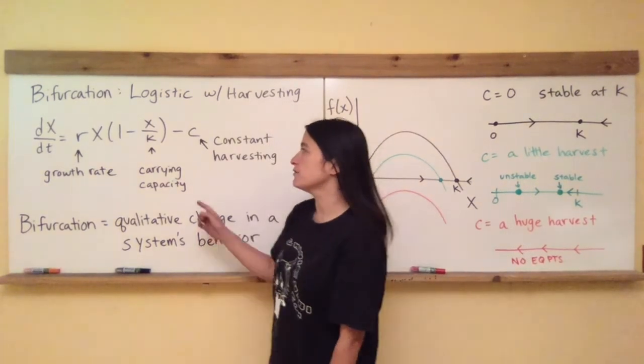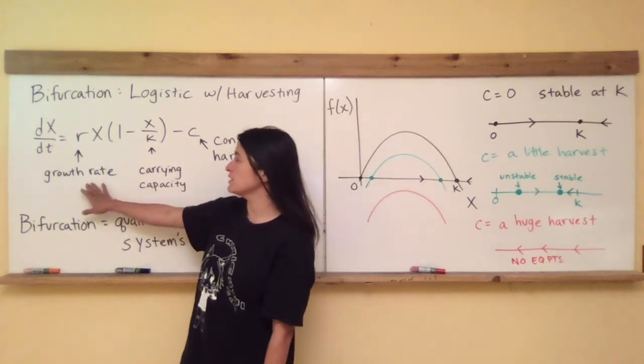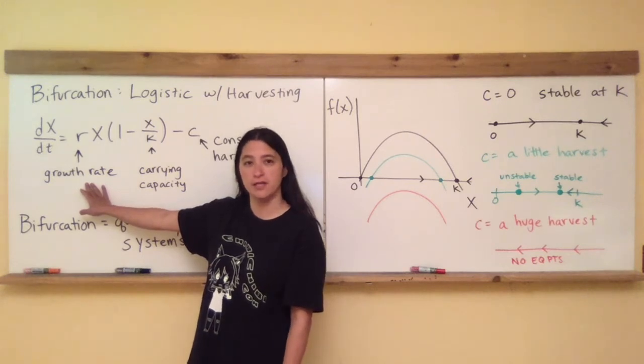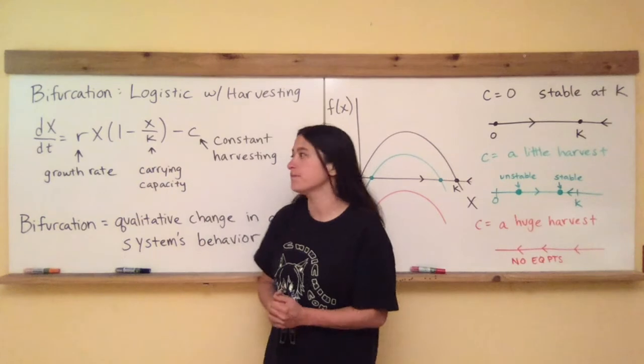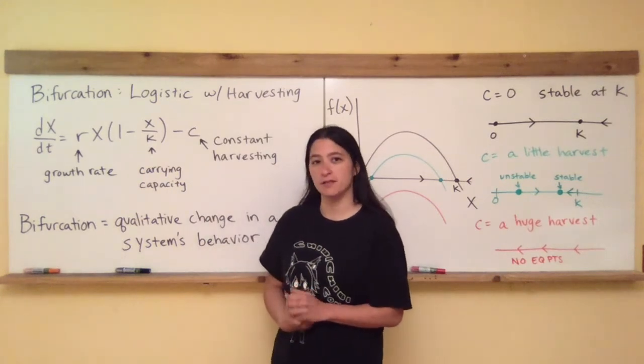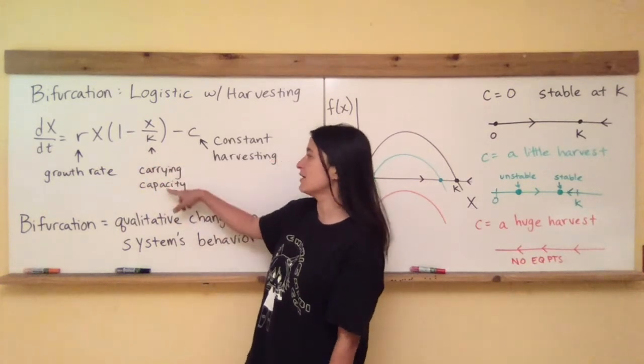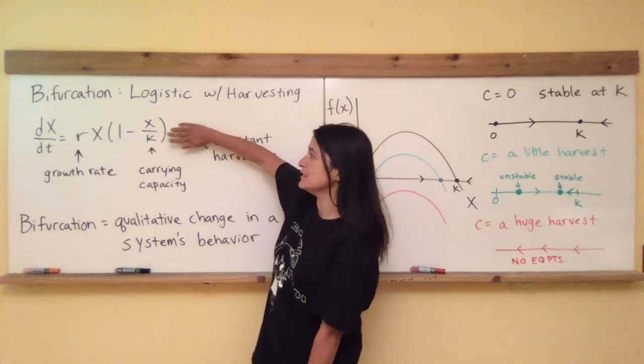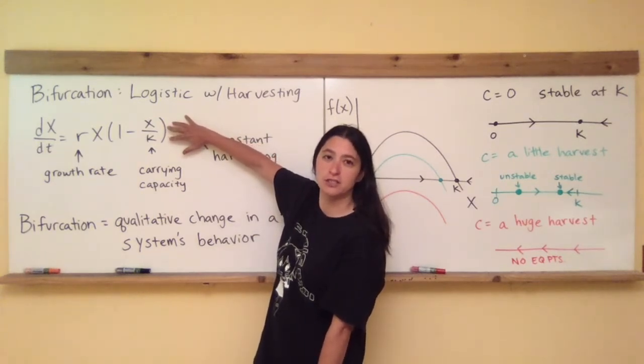Let's just review the logistic model really quick. In one dimension, we have the growing term Rx, where R represents the constant per capita growth rate. Then we have this rate limiting term that speaks to the finite availability of resources such as food and space, where we have 1 minus x divided by k, where k represents the carrying capacity. Without this extra stuff, that's your classical one-dimensional logistic equation.